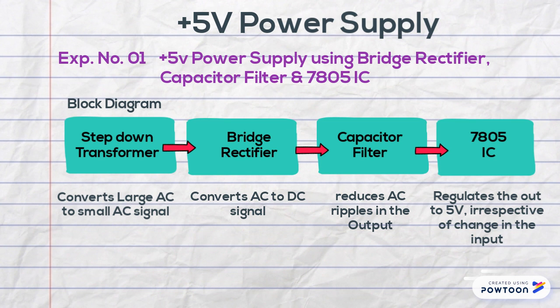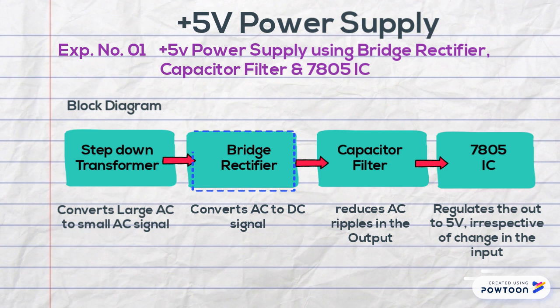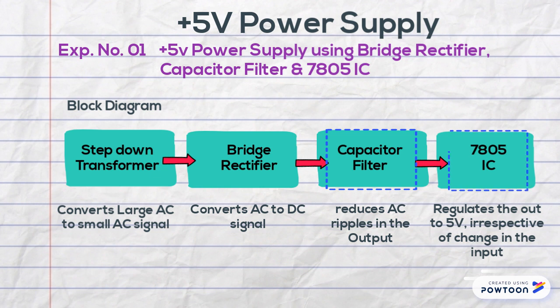Figure shows the block diagram. A step down transformer is used to convert a large AC signal into a small AC signal. This AC signal is converted into DC signal by the bridge rectifier, and the capacitor filter reduces the AC ripples present in the DC output. This signal is given to a regulator IC to get a constant 5 volts DC output.